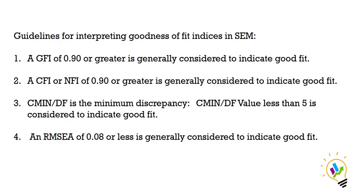Now let us see some guidelines for interpreting goodness of fit in SEM. The first one is GFI — this value must be greater than 0.9 to be considered a good fit. The next one is CFI — this value must also be greater than 0.9. The third one is CMIN/DF, the chi-square value divided by degrees of freedom — this minimum discrepancy value must be less than 5 to be considered good, and less than 3 is considered excellent. The fourth one is RMSEA — this value must be less than 0.08.